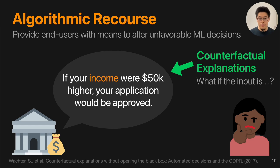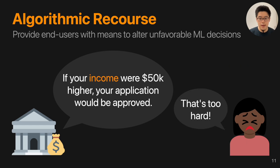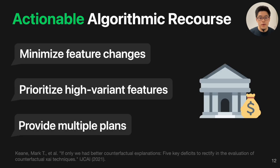It's very popular to provide counterfactual explanations as a way to provide algorithmic recourse. However, not all recourse are equal. Some recourse plans are very hard or even impossible to achieve. For example, increasing income by $50K may be impossible for some applicants. To help users gain more helpful recourse plans, recent research has focused on more actionable algorithmic recourse, proposing techniques such as minimizing feature changes, prioritizing easily changeable features, and providing multiple plans.